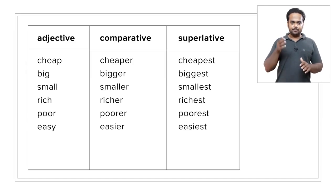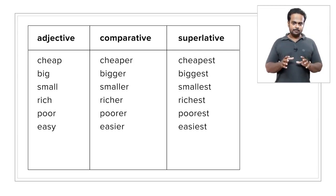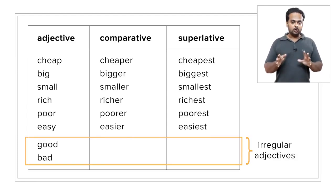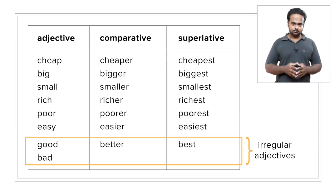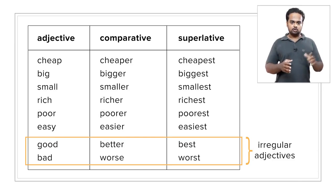In the same way, we have big, bigger, biggest; small, smaller, smallest, and so on. Some adjectives are called irregular because you cannot guess their comparative and superlative forms. For example, to compare using the adjective 'good,' we don't say 'gooder' and 'goodest' — we say 'better' and 'best.' Similarly, the comparative and superlative forms of 'bad' are: bad, worse, and worst.